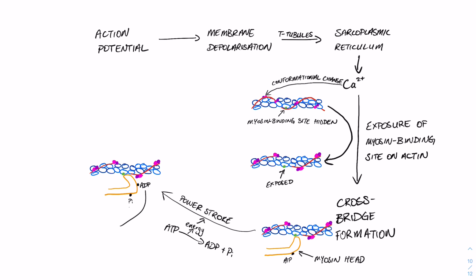And cleavage of that bond is going to release energy, and that's the energy that's going to provide the power stroke, leading to the pulling of the actin filament via the conformational change of the myosin head.